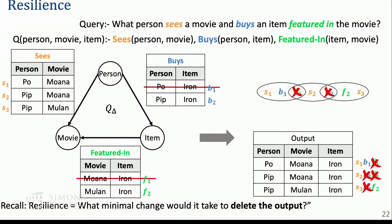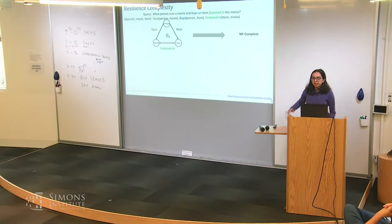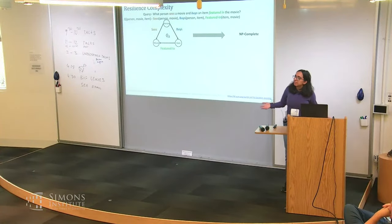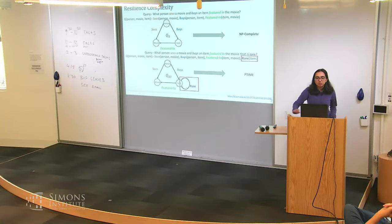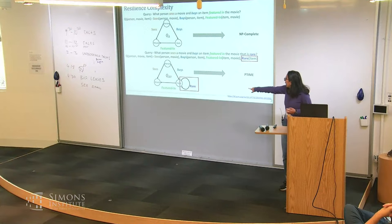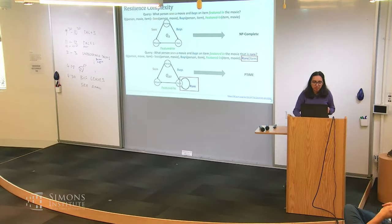You need to delete these two tuples, so the resilience value is 2 — the minimum number of modifications. It turns out for the triangle query this problem is NP-complete. But there's also the triangle unary query — add one atom — and for this you can solve in P-time. This was discovered in the 2015 paper.